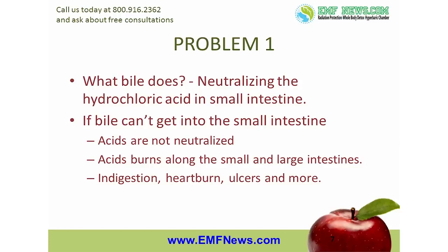But the small and large intestine have no such protection — they rely on bile. Bile is a very alkaline substance and when it comes into contact with the acidic food from the stomach, the acids are neutralized. If bile can't get into the small intestine in required amounts due to biliary sludge and gallstones, then stomach acids in the food are never fully neutralized. They can cause acid burns along the entire length of the small and large intestines — all 30 plus feet of them. We experience this as indigestion, heartburn, ulcers, and all manner of digestive complaints. In essence, we are digesting our own intestines.